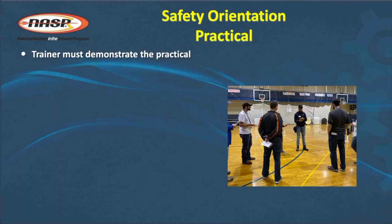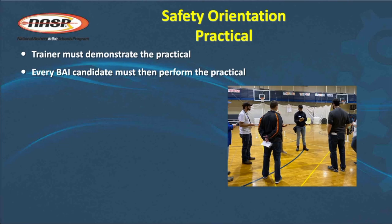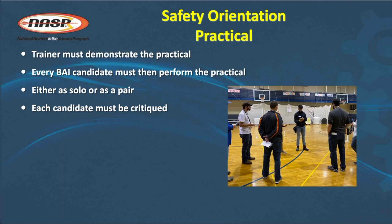The trainer must demonstrate the practical first — that's going to take 13 to 15 minutes to demonstrate for everyone in the class. Then each of them must perform the practical themselves, either as a solo or as a pair. Every candidate must be critiqued. When one candidate is conducting the safety orientation to their peers, a critiquer must shadow that presenter to make sure they say everything correctly, keep the language positive, and don't get ahead of themselves. If something goes wrong, you stop and have them correct it immediately because the peers are learning from them as they do it.